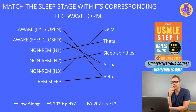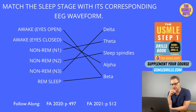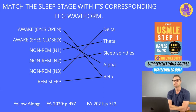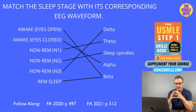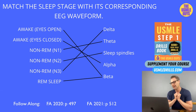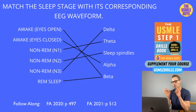Let's look at the stages of sleep. Starting with the first stage: you're awake with your eyes open. This is characterized by beta waves, which have the lowest amplitude but highest frequency. REM sleep is also characterized by beta waves. The next stage is when you're awake but your eyes are closed, characterized by alpha waves.